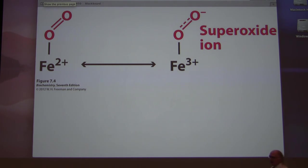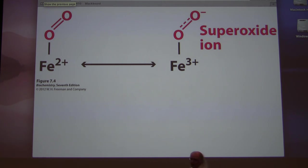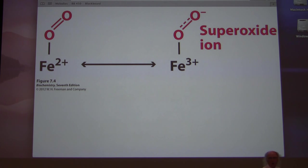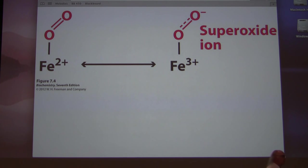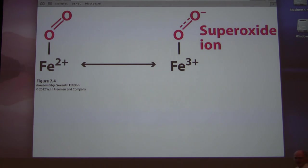The iron in hemoglobin is in the plus-two state, sharing electrons in resonance with the heme structure. Hemoglobin must have iron in the plus-two state in order to bind oxygen — if it doesn't start in the plus-two state, it will not bind oxygen.